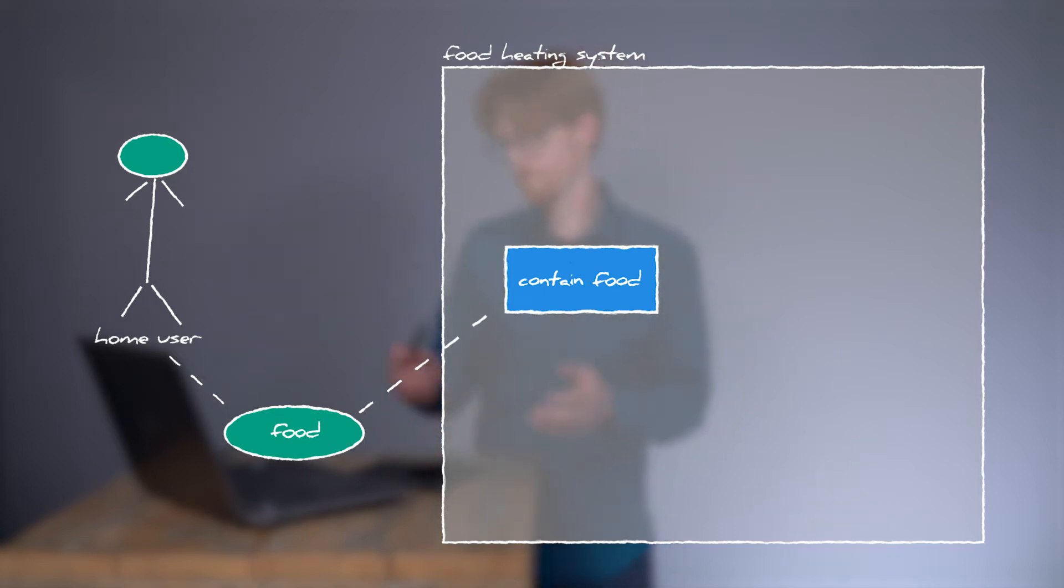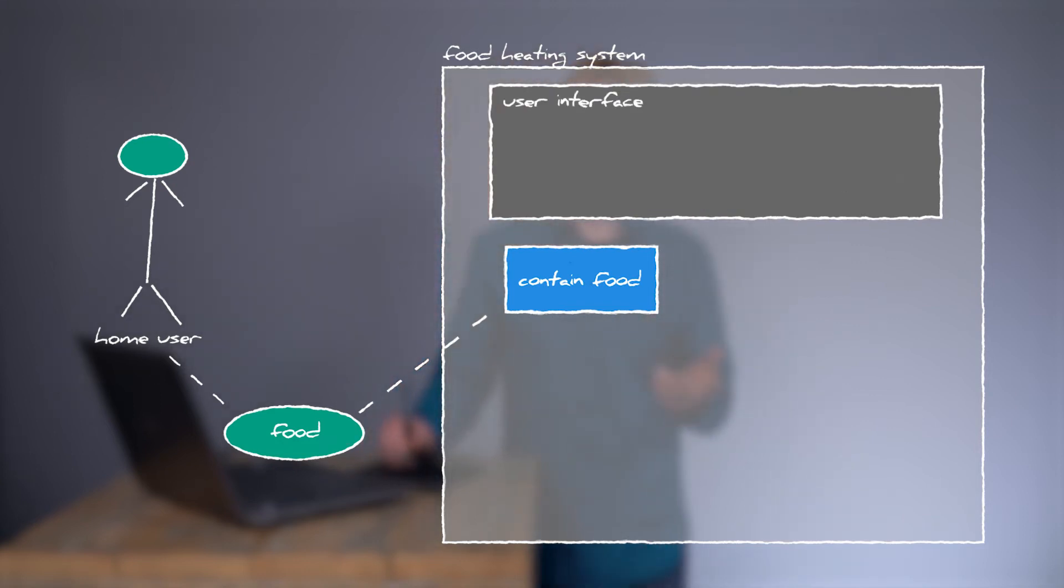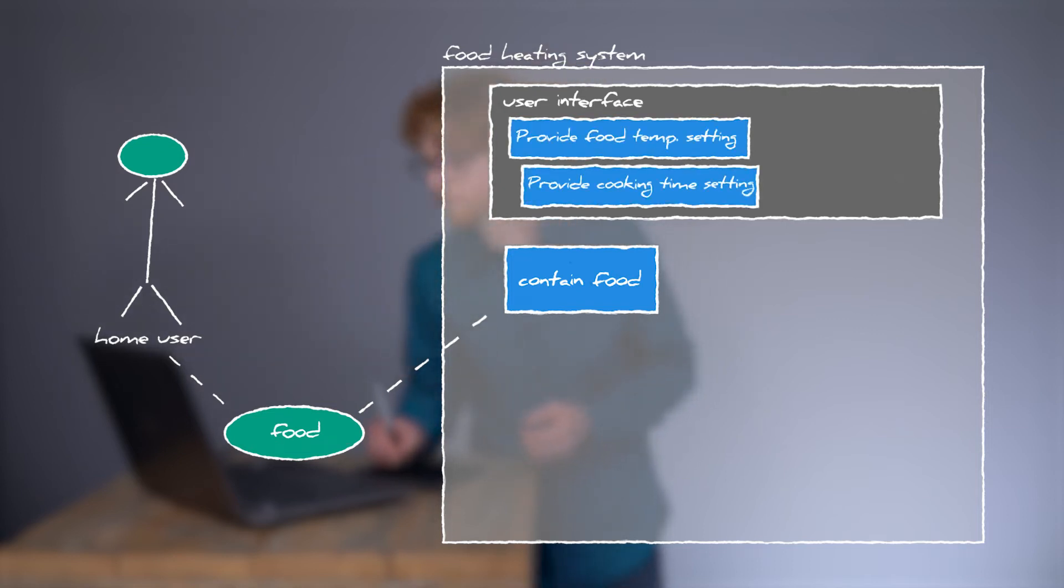Or when ice cream is placed in the food heating system and commanded by the user to defrost the ice, the system shall be able to defrost within 10 seconds. Hey, commanded by the user so we need to add that. So probably there will be a user interface and I can add this as a part and give parts a different color. In this case dark gray. I don't know what the user interface will look like at this moment. It can still be a physical knob but also maybe an Android app. But I'll add functions to show what needs to be done. As a function as a verb and objective I'll put provide food temperature setting and provide cooking time setting.